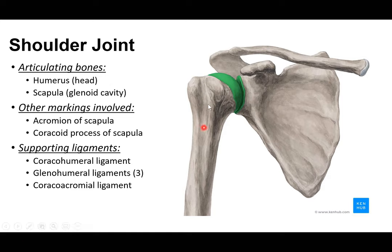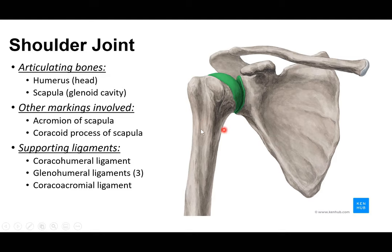The humerus contributes to the glenohumeral joint via the smooth articular surface of the humeral head. Also on the anterior proximal humerus are the lesser and greater tubercles with the intertubercular groove between them. The anatomical neck runs around the humeral head — all of these features are attachment sites for structures that help stabilize the shoulder joint.